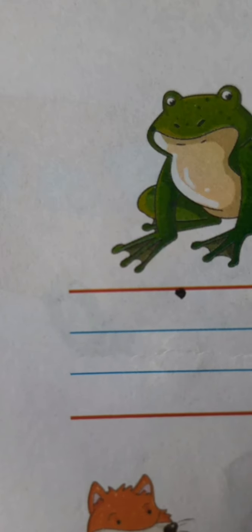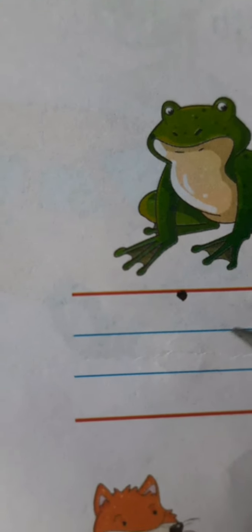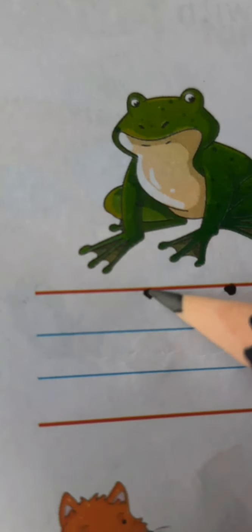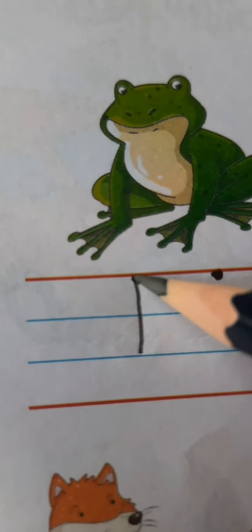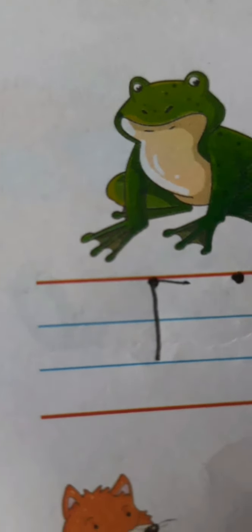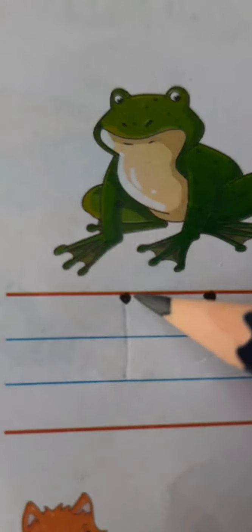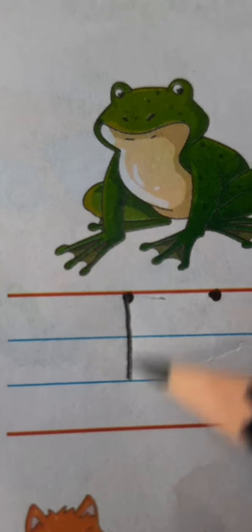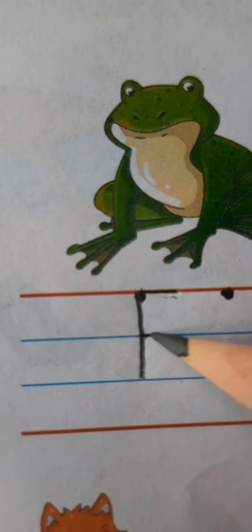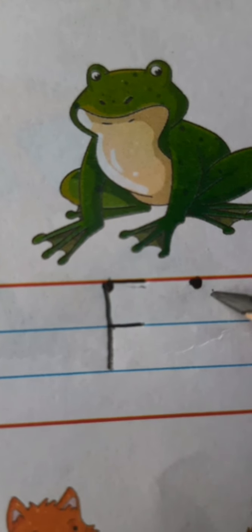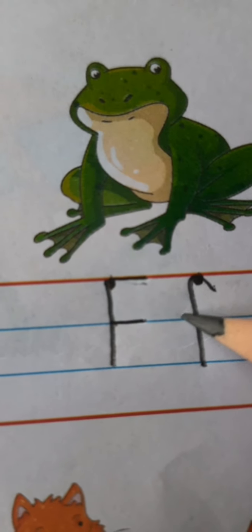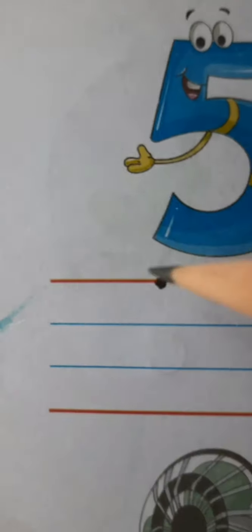F is for frog. Frog. F is for frog. So this is capital F children. And this is small f. F is for five. Five. So let's write fast children. So F is for five.